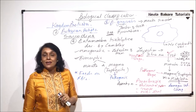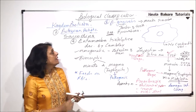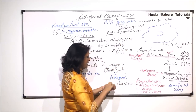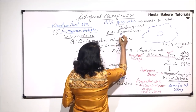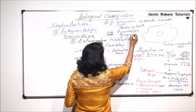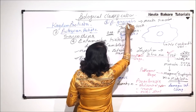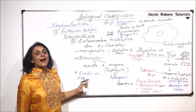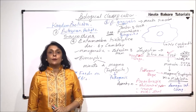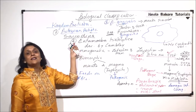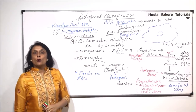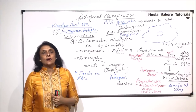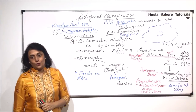In pyorrhea, the gums are swollen and start to bleed. This condition is also known as gingivitis, named after gingivalis. So pyorrhea and gingivitis are the same condition. These are important examples of the group Sarcodina in Protozoa, and in the next video we will take up another important group of Protozoa.